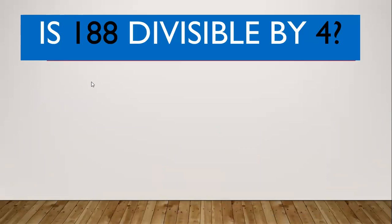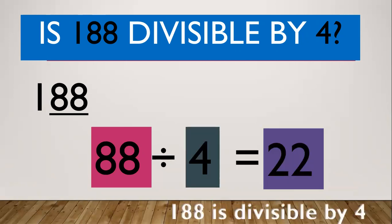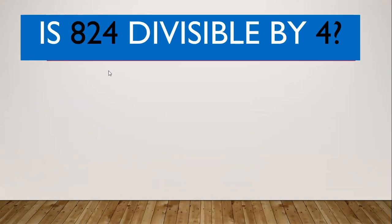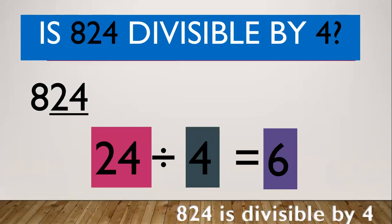Another one. Is 188 divisible by 4? The last two digits of 188 is 88. Then check if 88 is divisible by 4. 88 divided by 4 equals 22. So therefore, 188 is divisible by 4. Is 824 divisible by 4? The last two digits of 824 is 24. 24 divided by 4 equals 6, so we get the exact value. Therefore, 824 is divisible by 4.